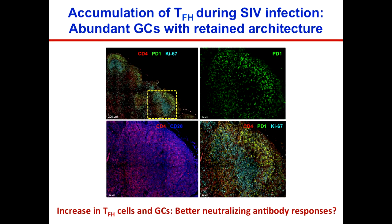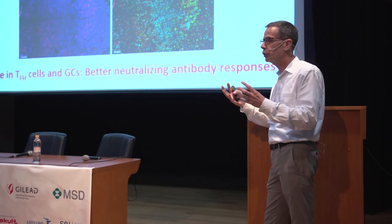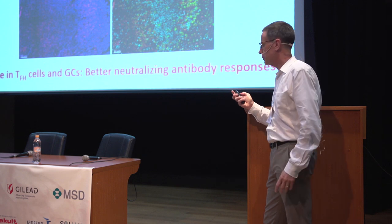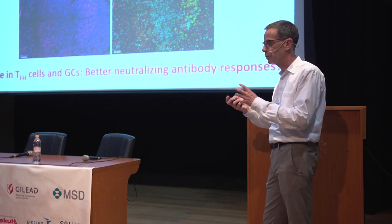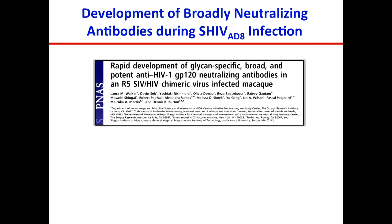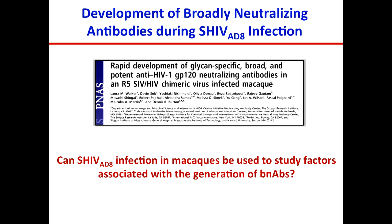If you have hyperplastic germinal centers where B cells and T cells are interacting, shouldn't that lead to a better antibody response? We decided to address this question not in SIV infection, but SHIV infection, using a SHIV with an HIV envelope — SHIV-88 — where it was shown that many animals infected with this SHIV actually went on to develop broadly neutralizing antibodies. So we asked: can SHIV-88 infection in macaques be used to study factors associated with the generation of broadly neutralizing antibodies?